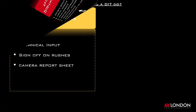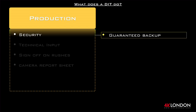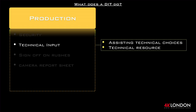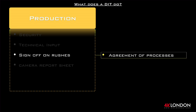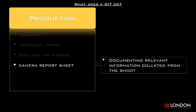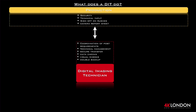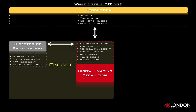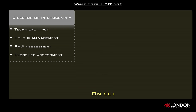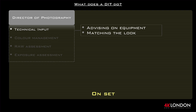What can a DIT do for production? Security — safe in the knowledge that what is shot on set is in the bag. Technical input — if a production is unsure of a process or has any questions, they can go to the DIT and ask, such as why are we shooting raw, or why do we need this bit of kit. Sign off on rushes, ensuring the various checks and procedures are all complete. Camera report sheets are used to document information about the shoot, material shot, and anything else that needs highlighting. The next point of communication is between the DIT and the Director of Photography — this relationship is very important and allows both parties to become comfortable with the parameters and expectations of the job.